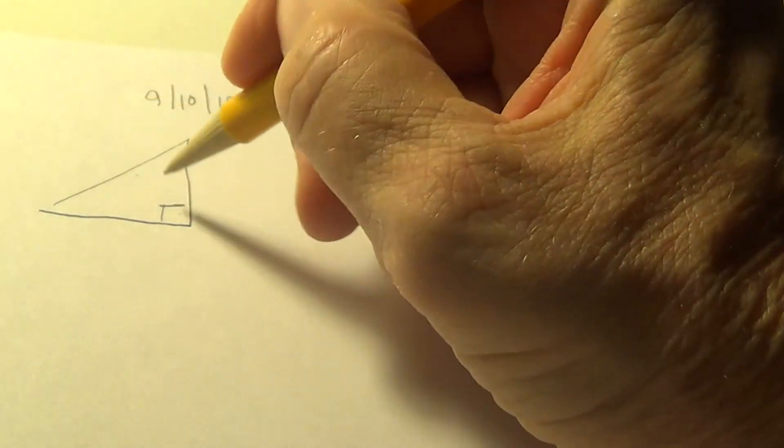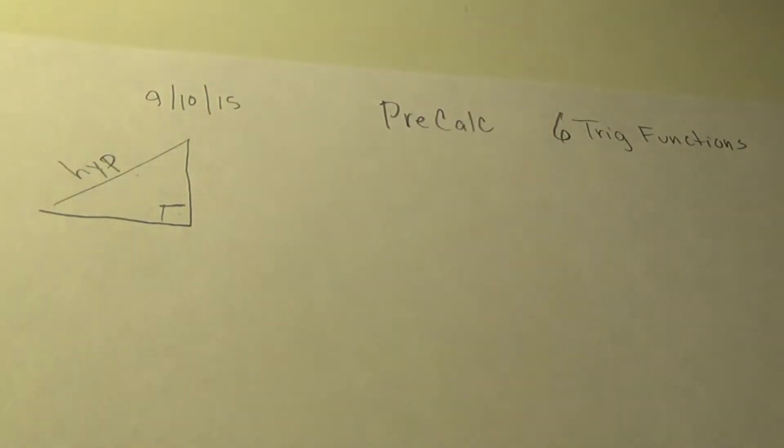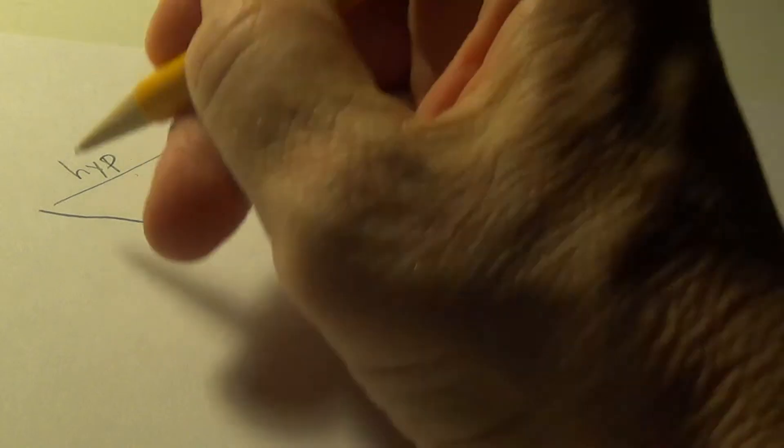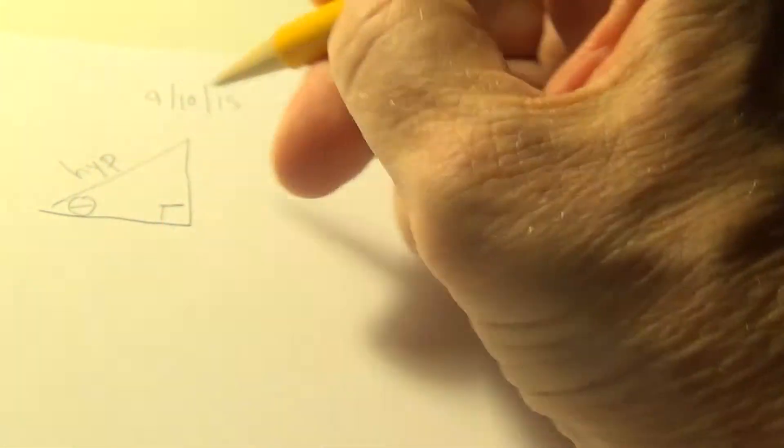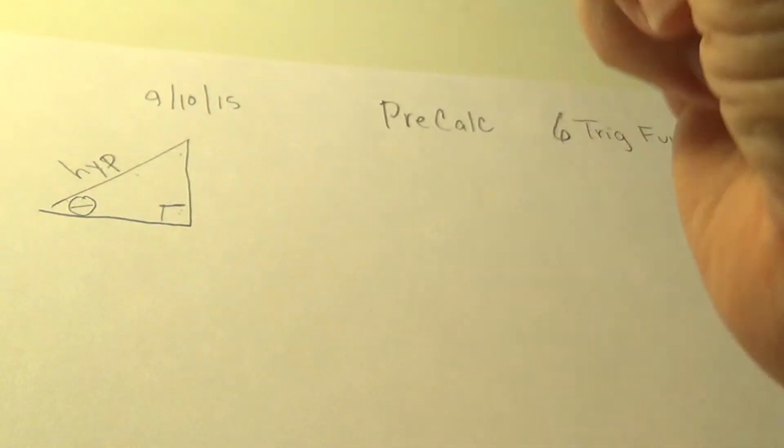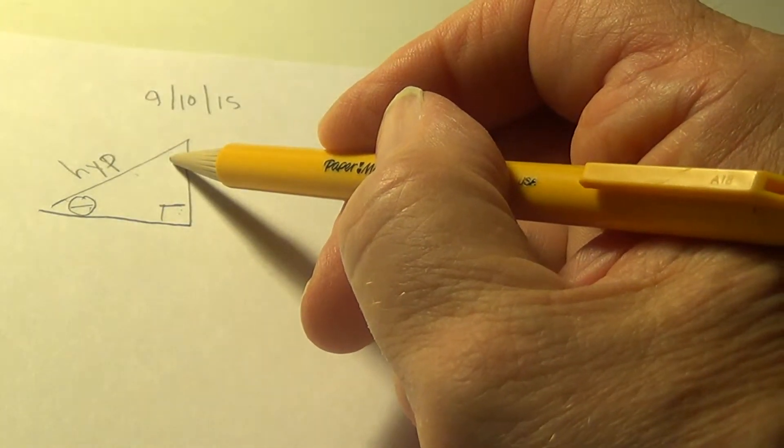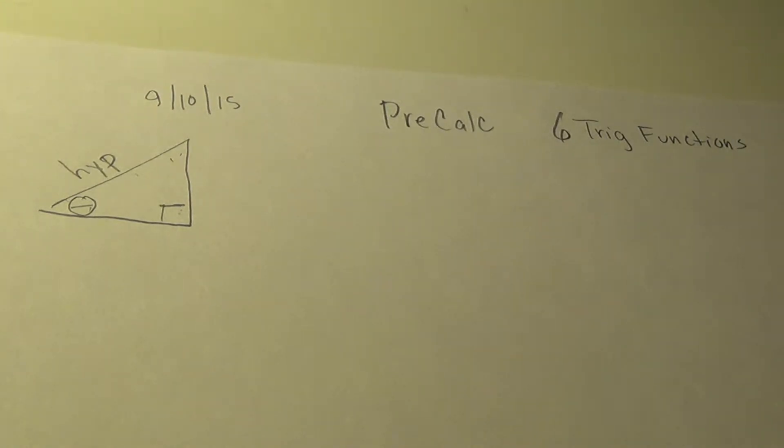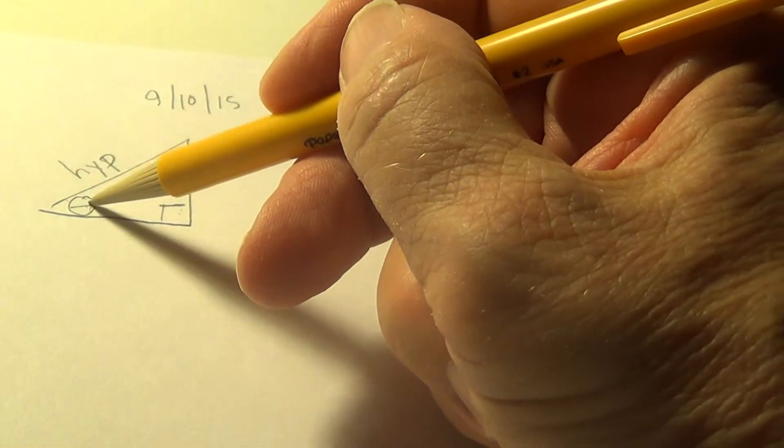We're going to start with a right triangle and we're going to name some sides. The side across from the right angle in a right triangle is the hypotenuse. I can talk about trig functions in relation to this angle or this angle, but not in relation to the right angle. So I picked this angle and I called it theta. I could have called this angle theta and it would have been peachy keen.